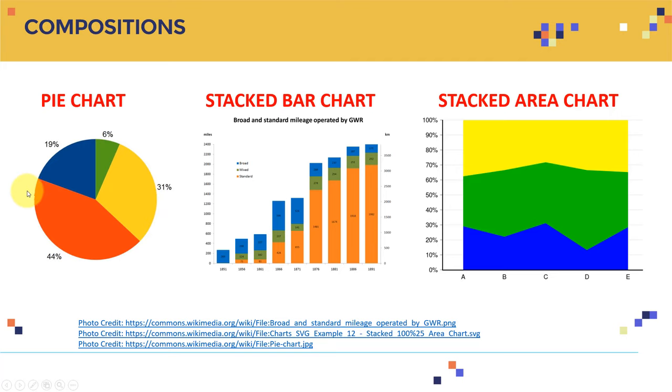44% voted conservatives, 19% with the NDP, something like that. So I can divide the Canadian population or the American population by using a pie chart. So I can see the composition as well.